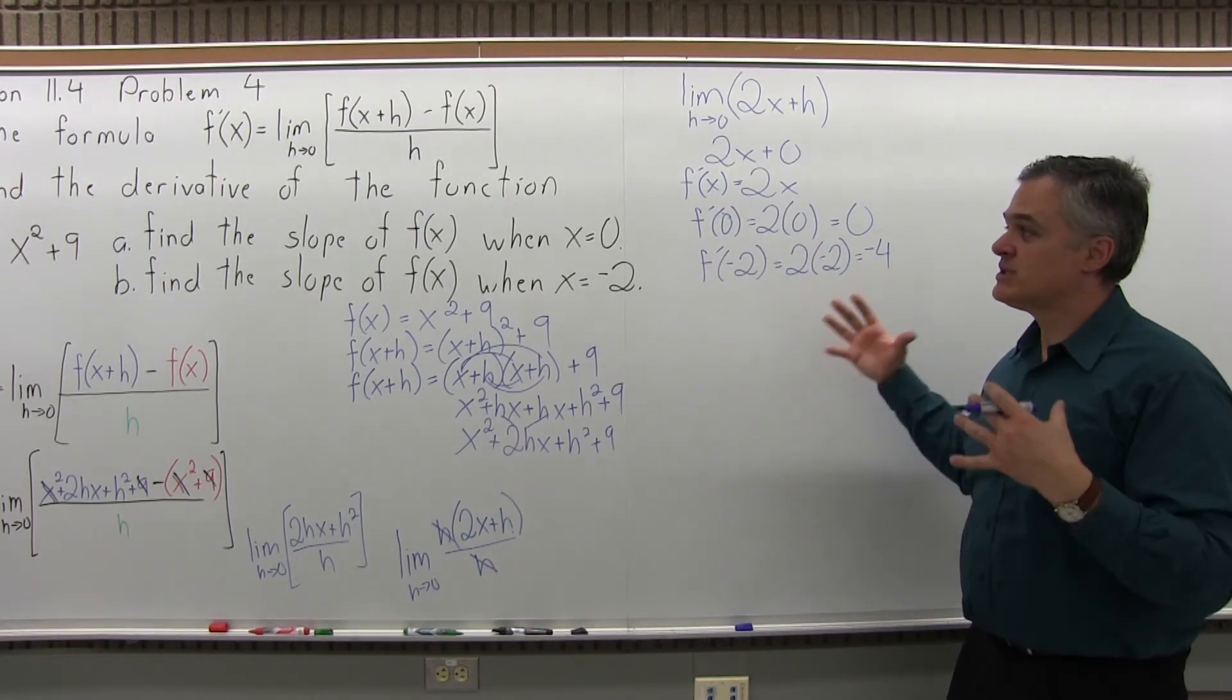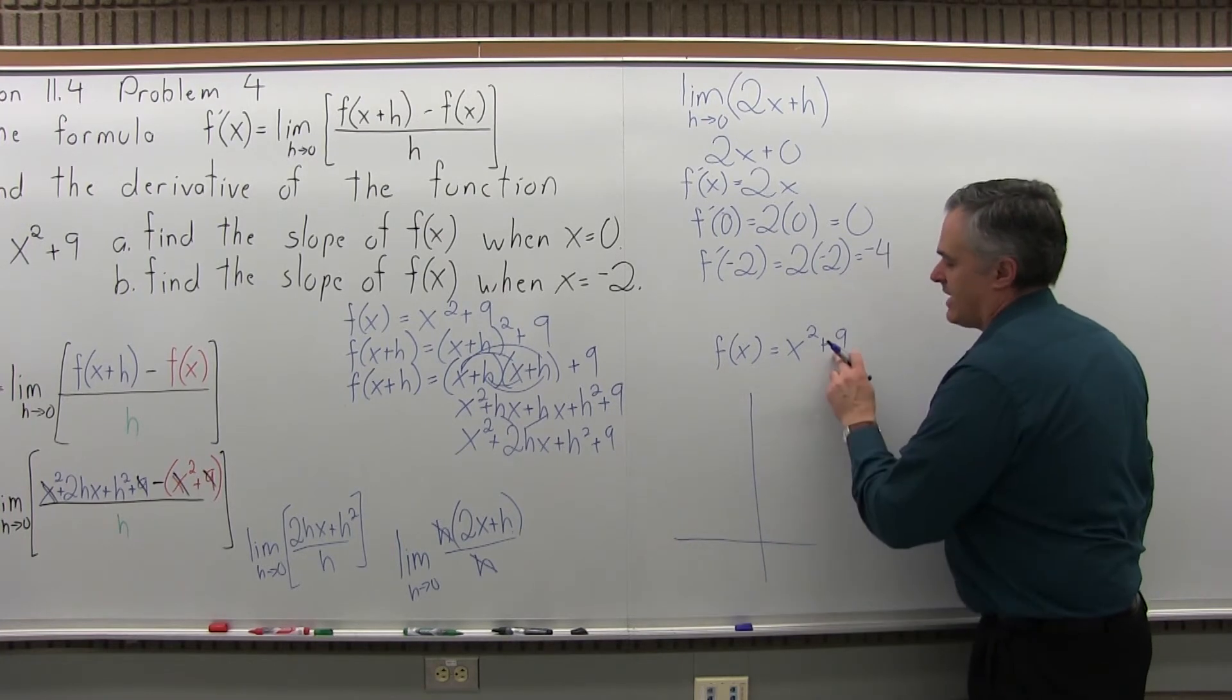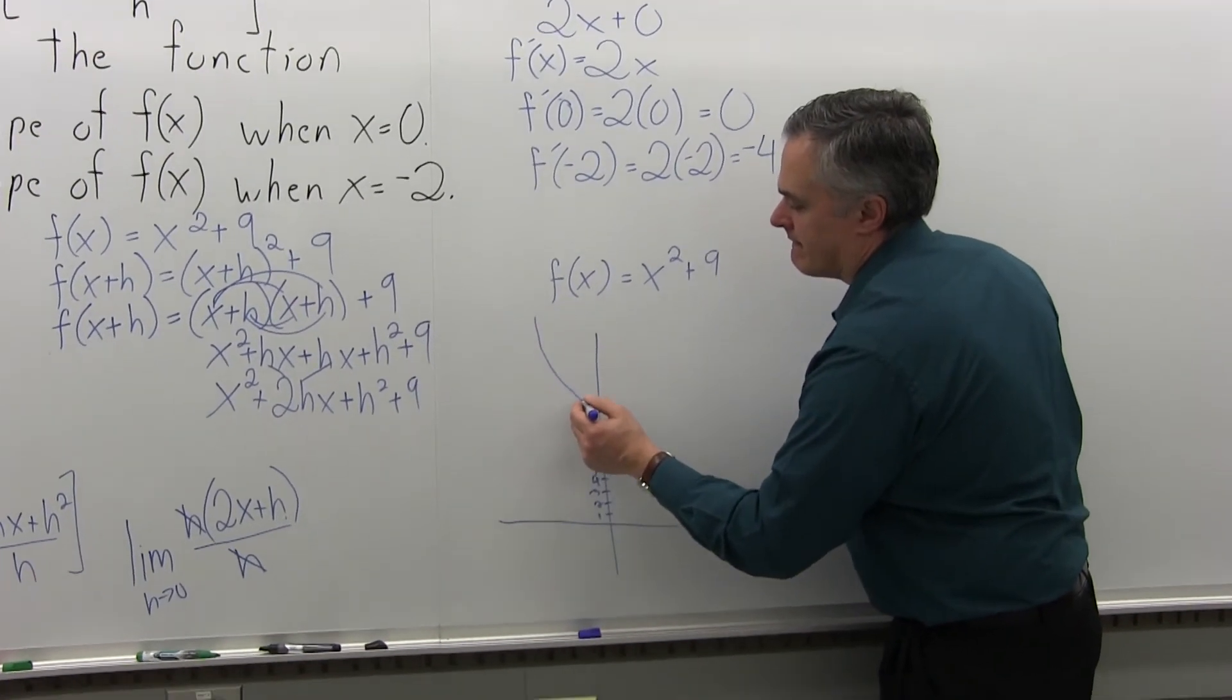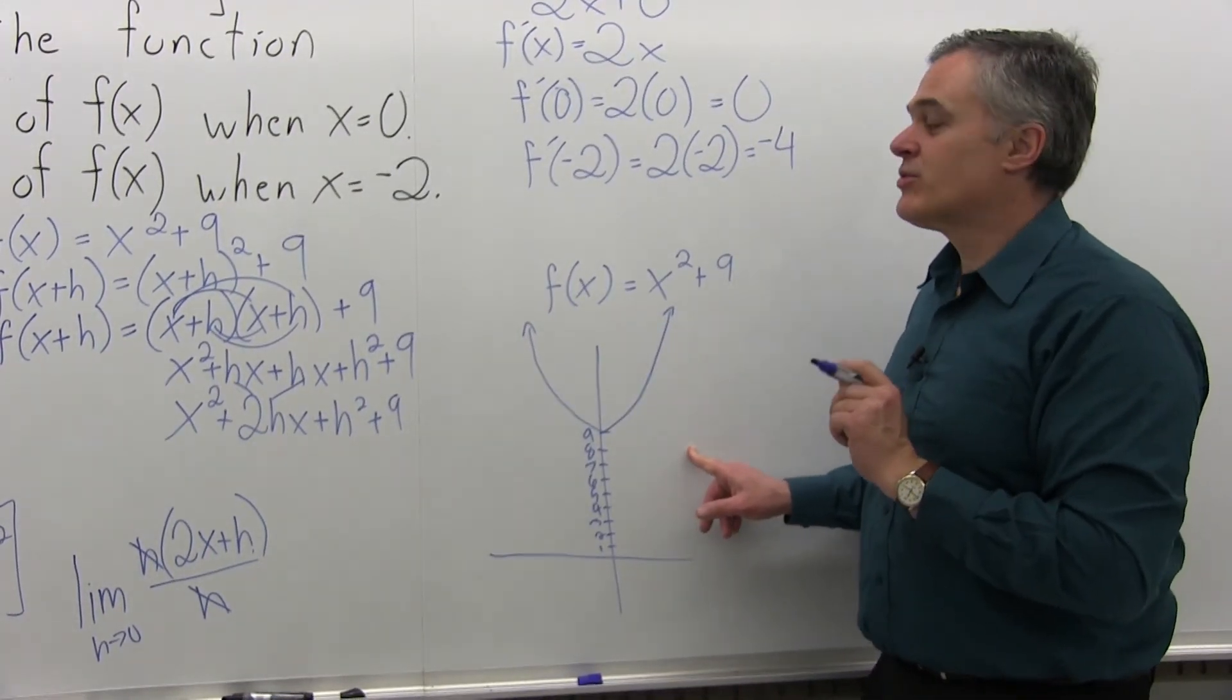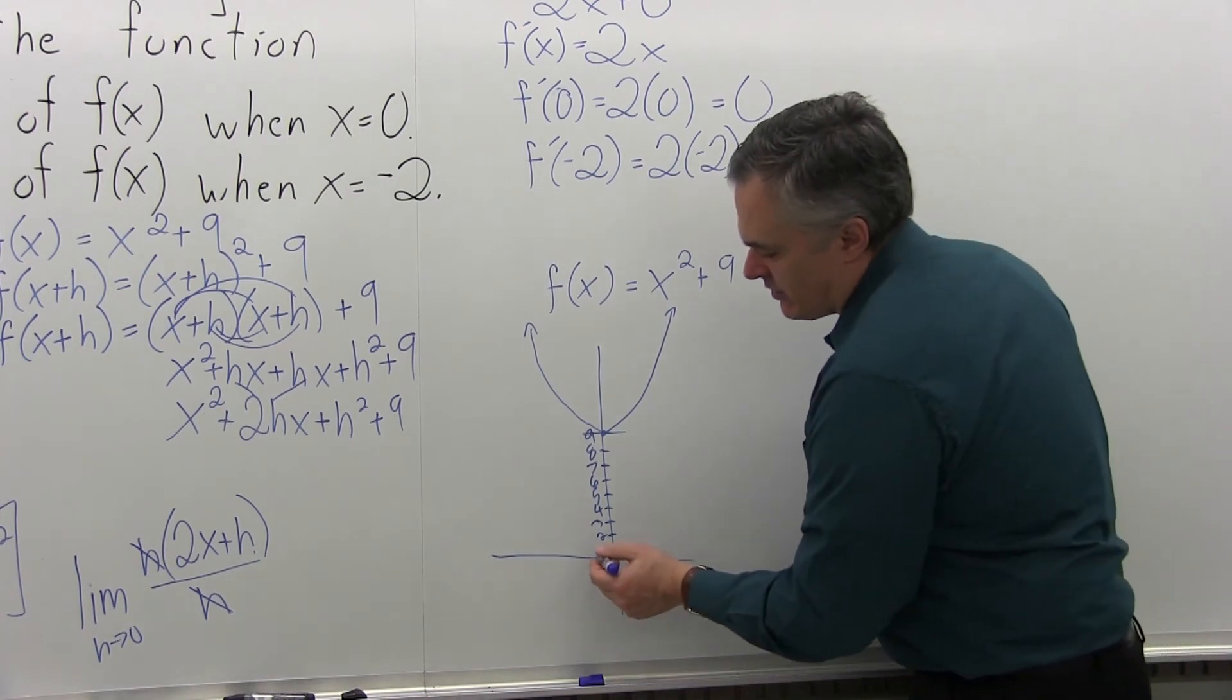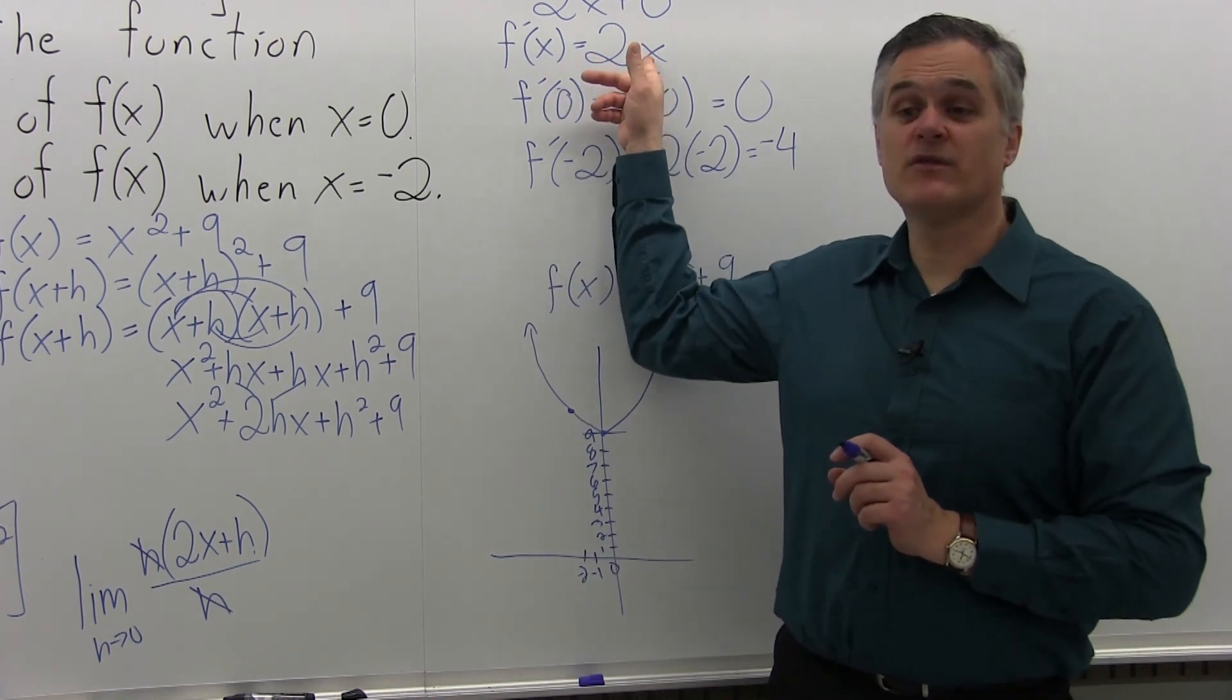We didn't have to see the graph, but just to visually tie it together, I happen to know f(x) = x² + 9 is a parabola with the vertex that's up 9. So if I come up 1, 2, 3, 4, 5, 6, 7, 8, 9, I have this picture. It's very similar to the picture in problem 3, except it's been lifted by 9. So now when x is zero, I have a slope of zero. The slope is zero there. When x is -2, if I come back to in line here, the slope here is -4. When I have f'(x), I can find the slope for any value of x very easily just by plugging it in.